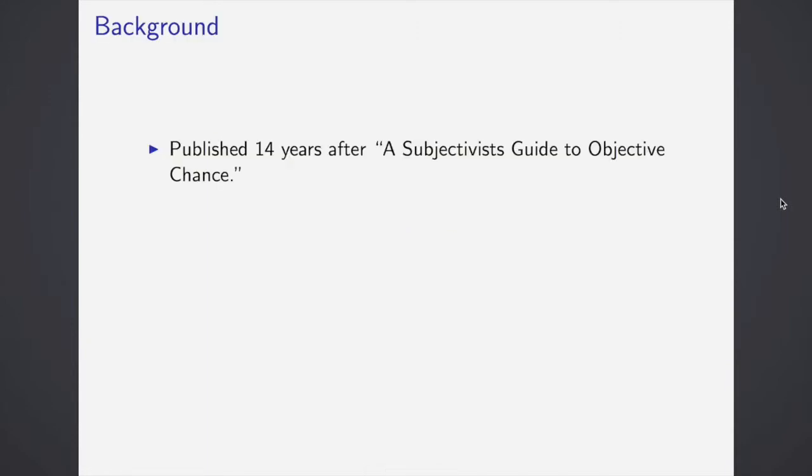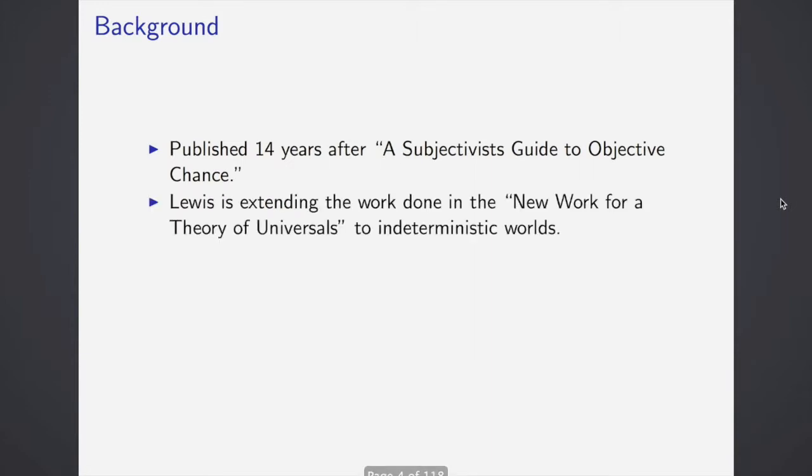This was published 14 years after the Subjectivist Guide to Objective Chance, where Lewis develops his theory of what chance is. He is extending the work that he did in another paper called New Work for Theory of Universals, but he wants it to go into indeterministic worlds, that is, worlds that it's not determined in advance what the outcome is going to be.